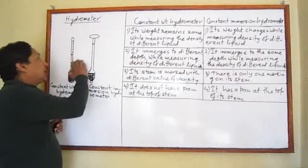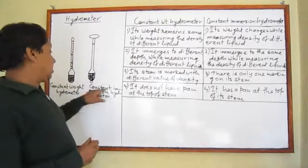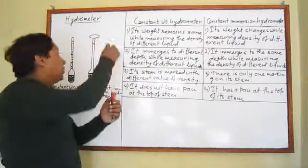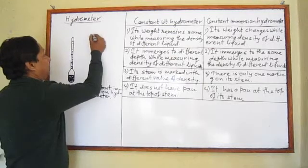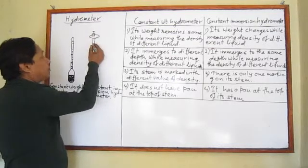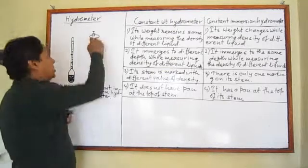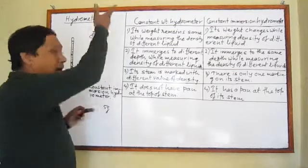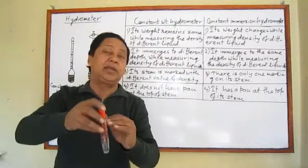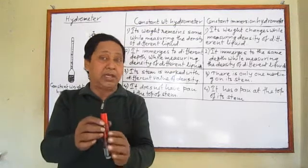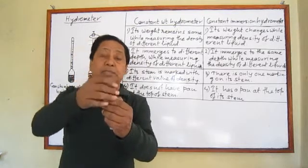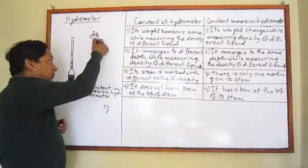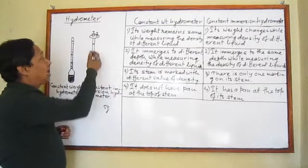In the case of the constant immersion hydrometer, first it is placed in distilled water and standard masses are put on the pan to immerse it up to the marking in distilled water. The amount of standard mass used is noted down — let's say it is 5 grams. Then it is taken out and placed into the liquid whose density we want to measure, and standard masses are again placed on the pan.